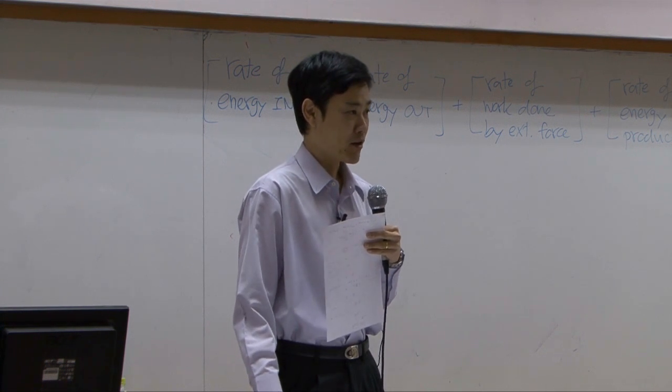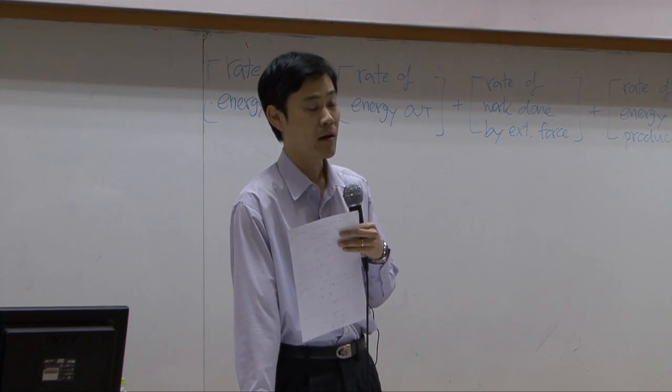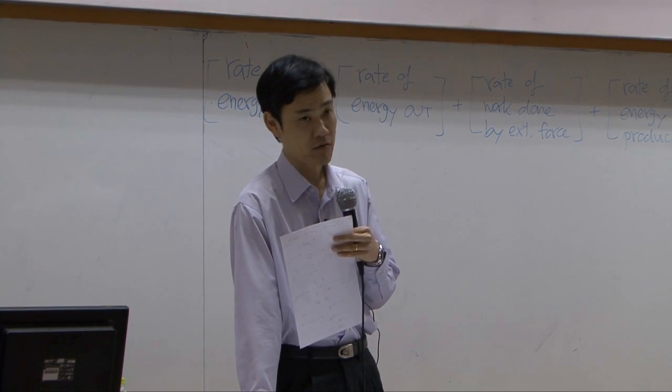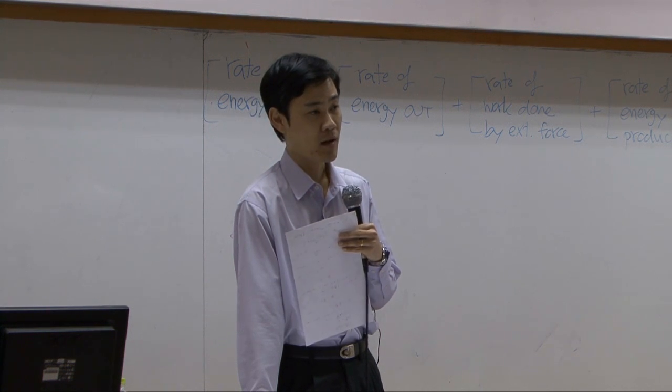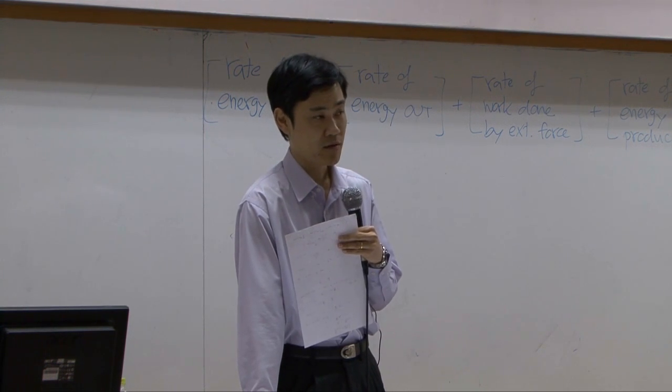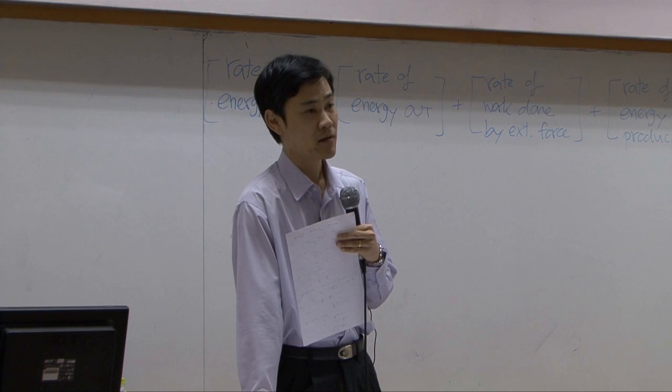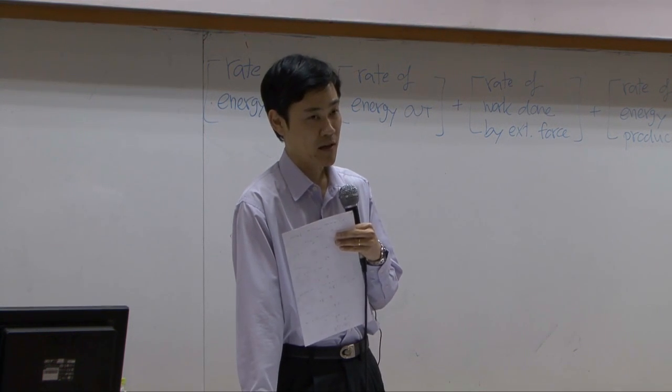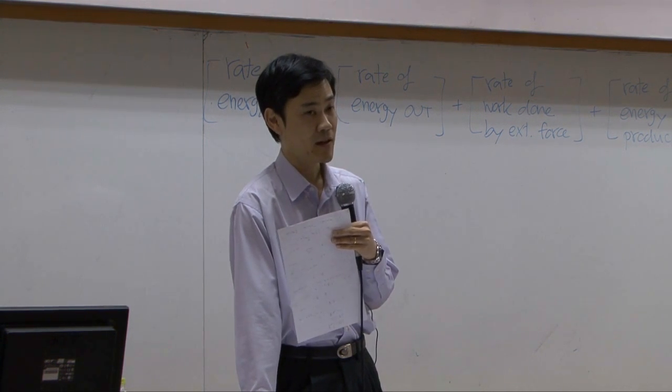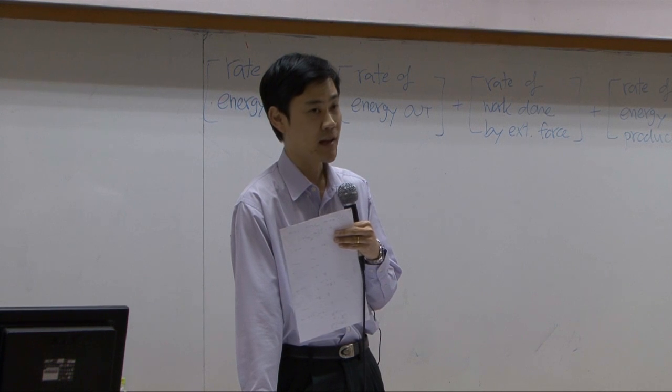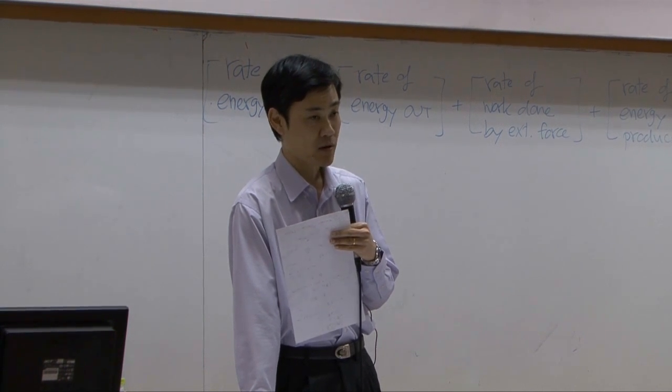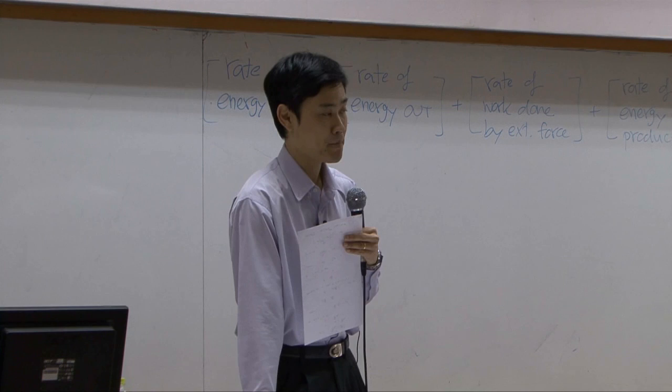All right, let's start for today. Last week we talked about energy transport in general: conductive energy transport, convective energy transport, and work. Those three components in energy transport. Conductive is represented by Fourier law, convective is calculated based on kinetic energy and internal energy of fluid coming into the system, and then work that we consider will be flow work.